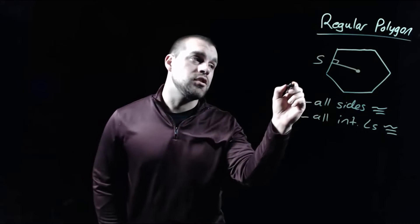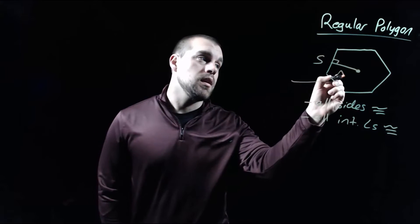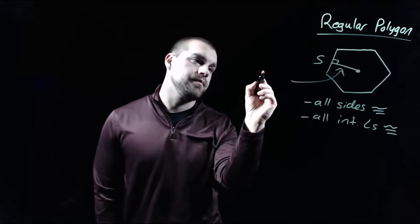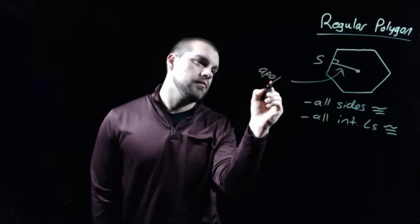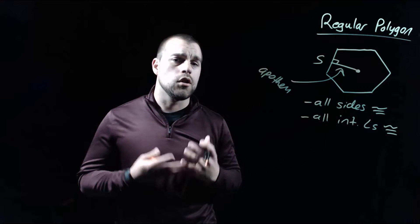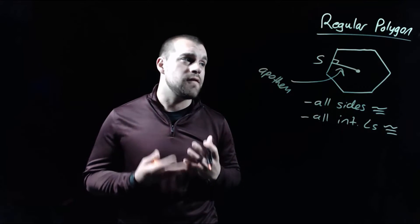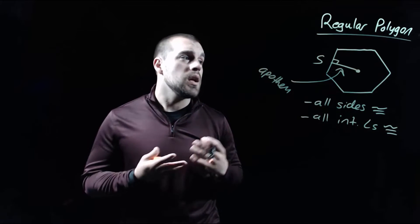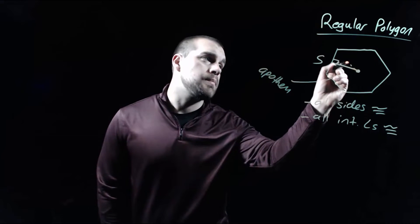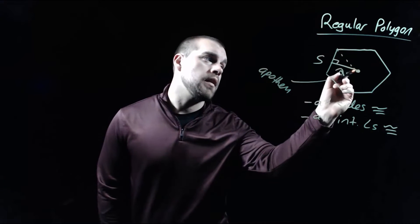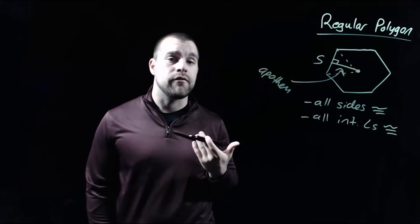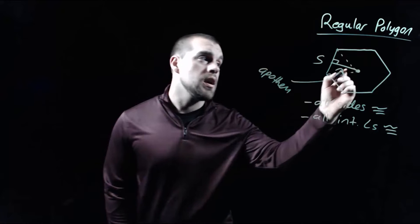That length that I just drew in is called an apothem. And then the way we can look at this figure is we can look at breaking this regular polygon up into a bunch of different triangles.